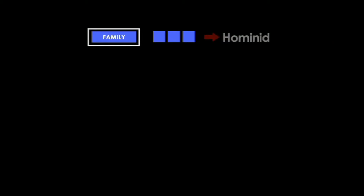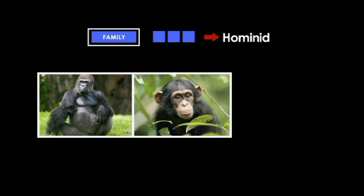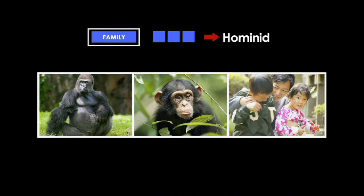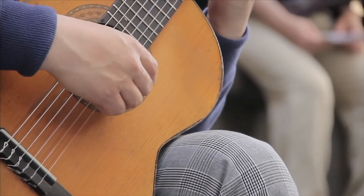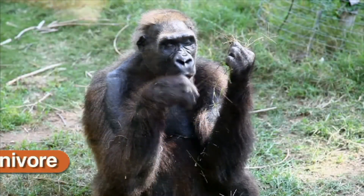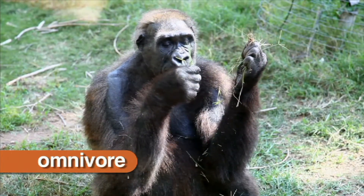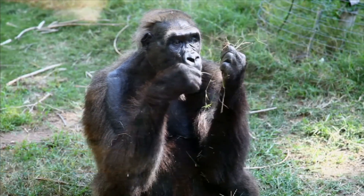Hominids are a family whose members include chimpanzees, gorillas, and humans. Hominids walk on two legs and have five fingers and five toes. Hominids are omnivores, which means they eat a diet consisting of both plants and animals.